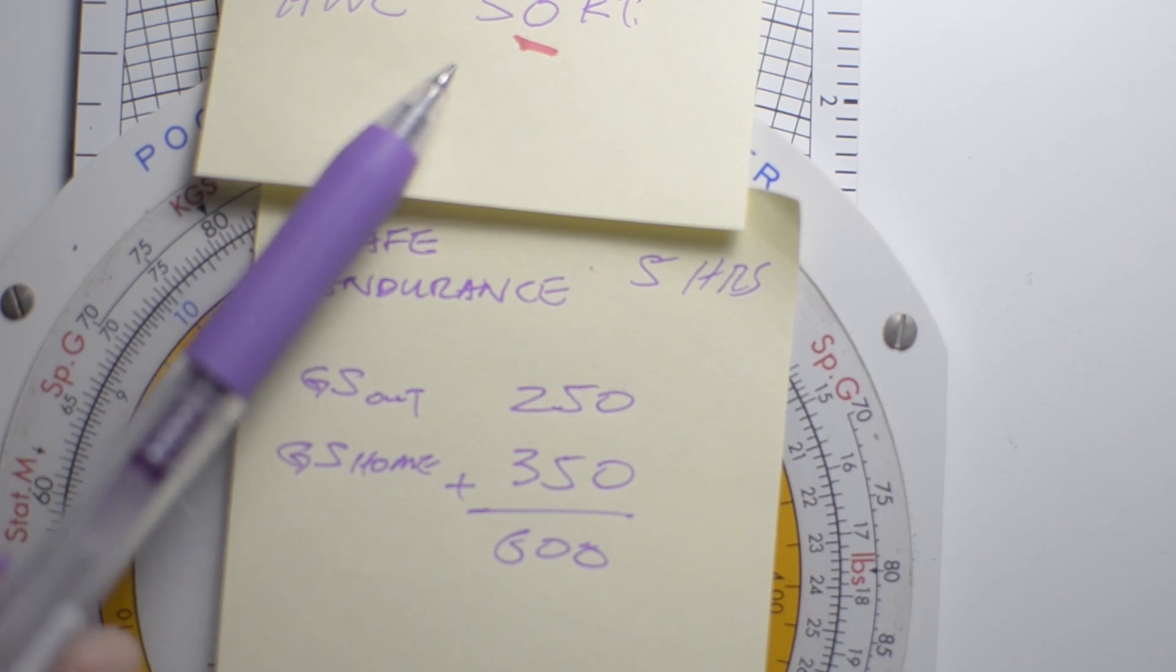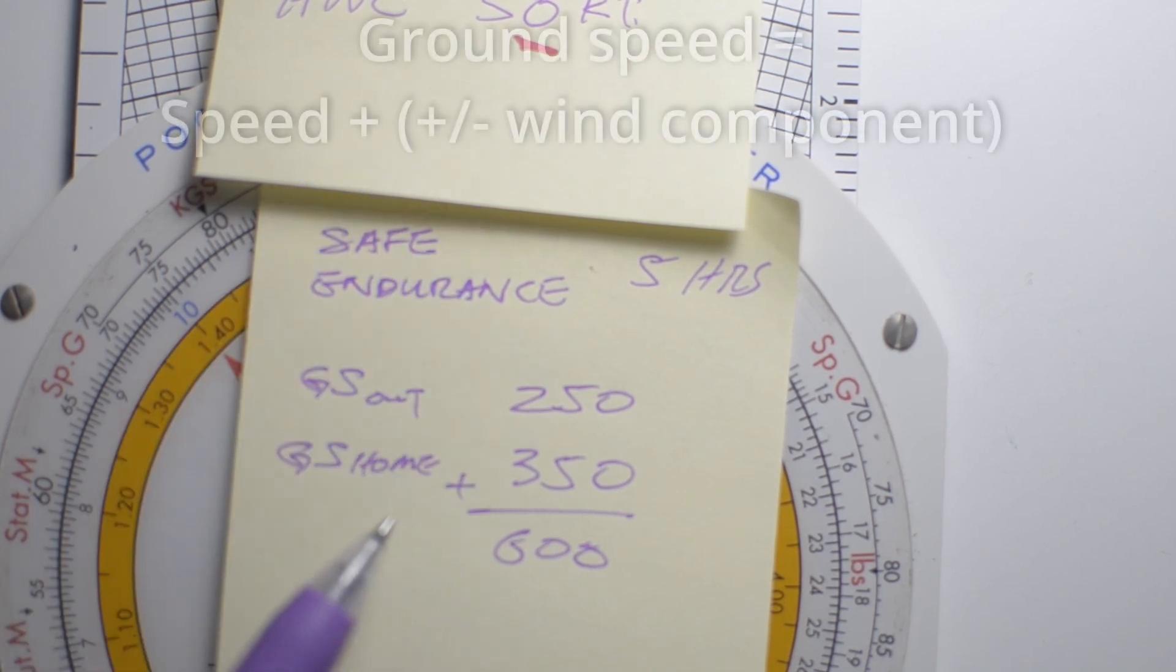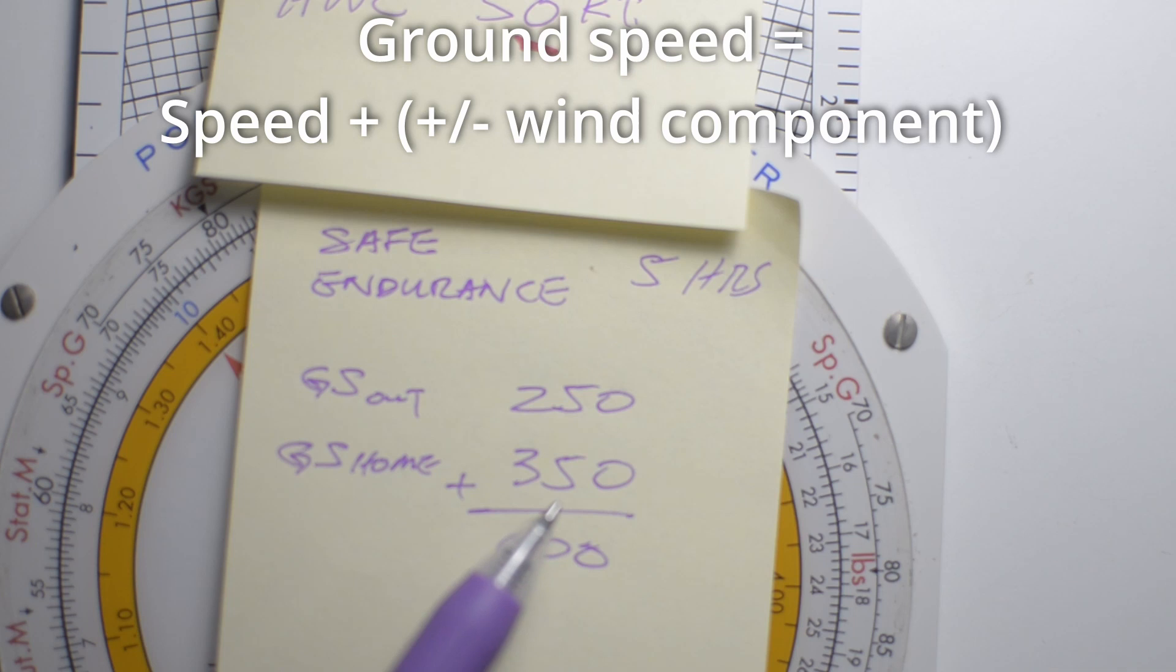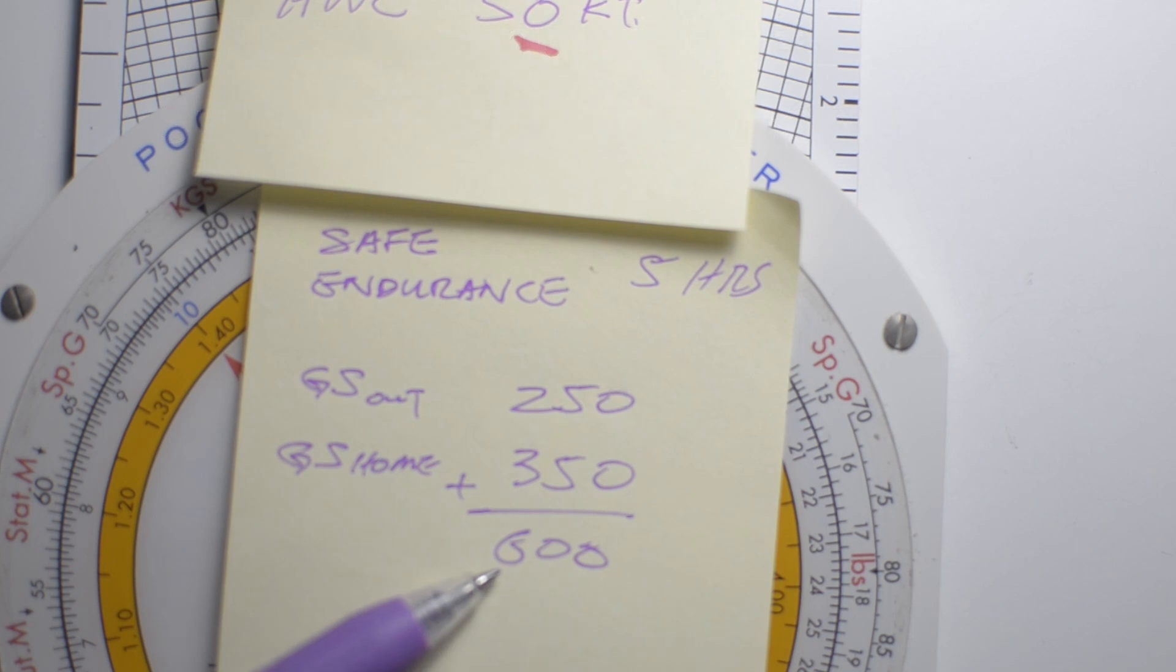that headwind component of 50 knots will now be a tailwind, and our ground speed home will be 350 knots. The sum of our ground speed out and ground speed home would be 600 knots.